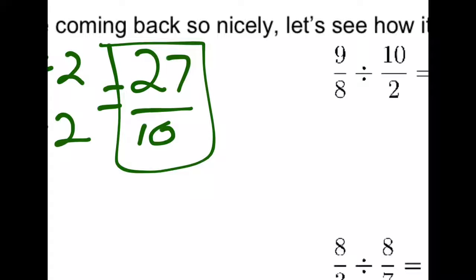Worth noting is that this is considered a top heavy fraction, 27 divided by 10. We could split this into a mixed number if we wanted to. How many times does 10 go into 27? Well it goes in twice, that will give us 20, with a remainder of 7. 2 and 7 tenths. You can leave them as top heavy fractions on this worksheet though.